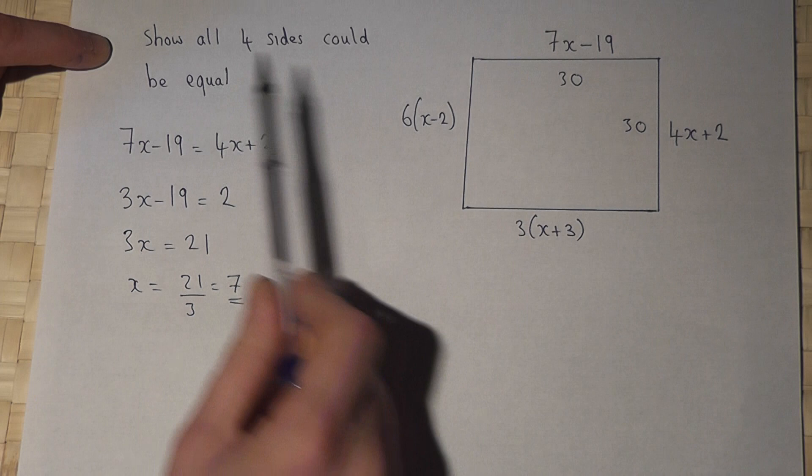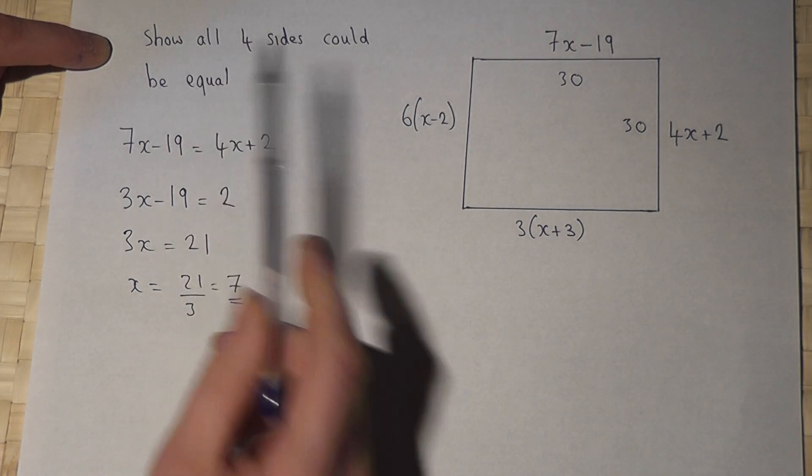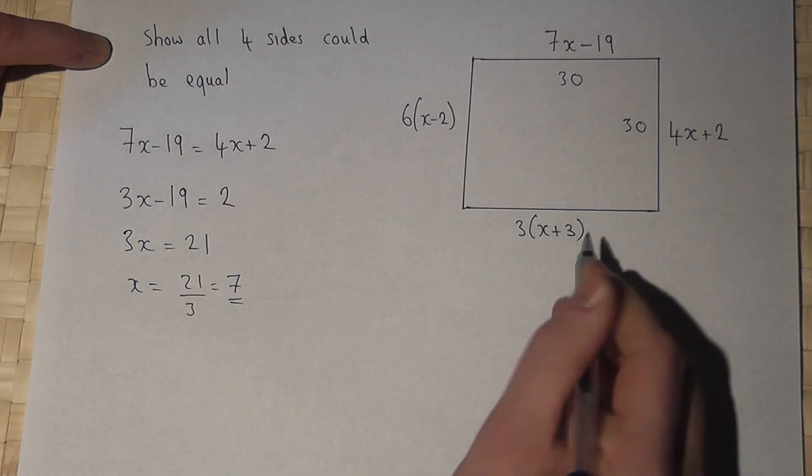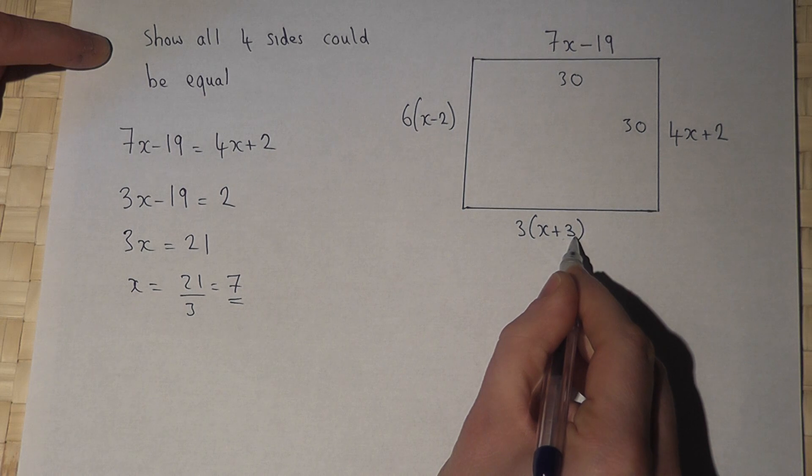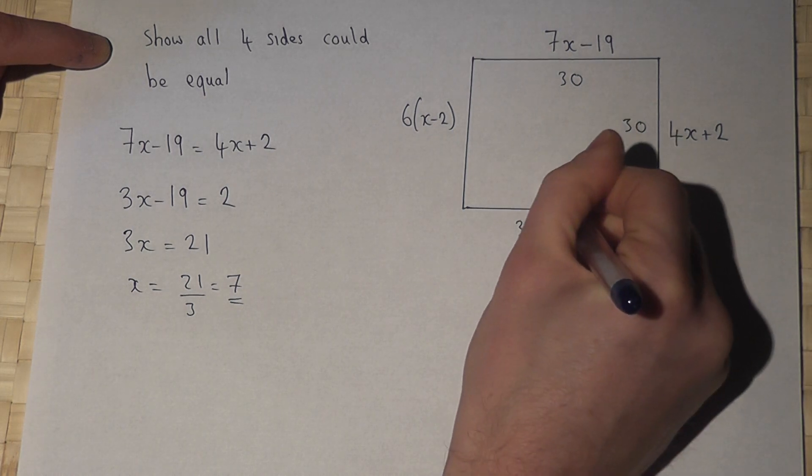But the question is, could all four sides be the same? Well, when x is 7, 7 plus 3 is 10, and 3 times 10 is also 30.